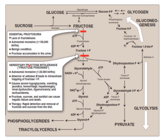The defect of aldolase B is called hereditary fructose intolerance. Autosomal recessive absence of aldolase B leads to intracellular trapping of fructose 1-phosphate, causing severe hypoglycemia, vomiting, jaundice, hemorrhage, hepatomegaly, renal dysfunction, hyperuricemia, and lactic acidemia. Fructose with sucrose and sorbitol can cause hepatic failure and death. Therapy involves rapid detection and removal of fructose and sucrose from the diet.